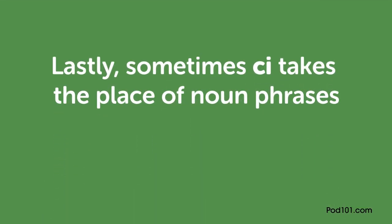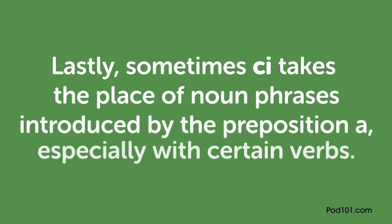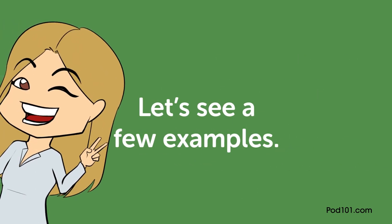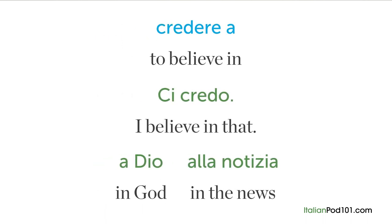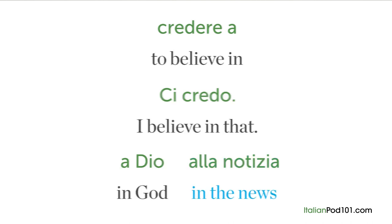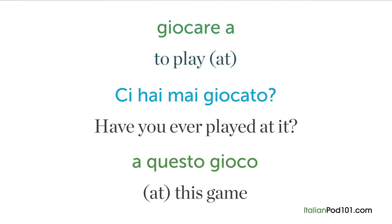Sometimes CI takes the place of noun phrases introduced by the preposition A, especially with certain verbs. With 'pensare a' — to think about — you may hear 'non ci pensare,' meaning 'don't think about it,' where CI stands for 'quel problema' — about that problem. With 'credere a' — to believe in — 'ci credo' means 'I believe in that,' where CI may stand for 'in Dio' or 'alla notizia.' With 'giocare a' — 'Ci hai mai giocato?' means 'have you ever played at it?'